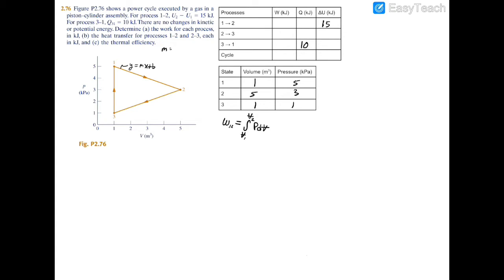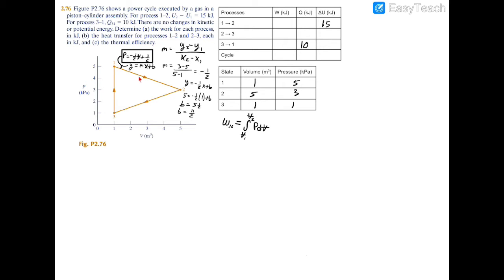First, let's find M, the slope. Remember that slope is equal to rise over run, so Y2 minus Y1 divided by X2 minus X1. Since Y is pressure, we're going to have 3 minus 5 on top and 5 minus 1 on the bottom. This gives a slope of negative 2 over 4, which is negative 1 over 2. To find the B value, plug the slope into Y equals MX plus B: Y equals negative 1/2 X plus B. Then plug in coordinate (1, 5), which is state 1. You get 5 equals negative 1/2 times 1 plus B, so B equals 5.5, or 11 over 2. The formula of this line is pressure equals negative 1/2 V plus 11/2.